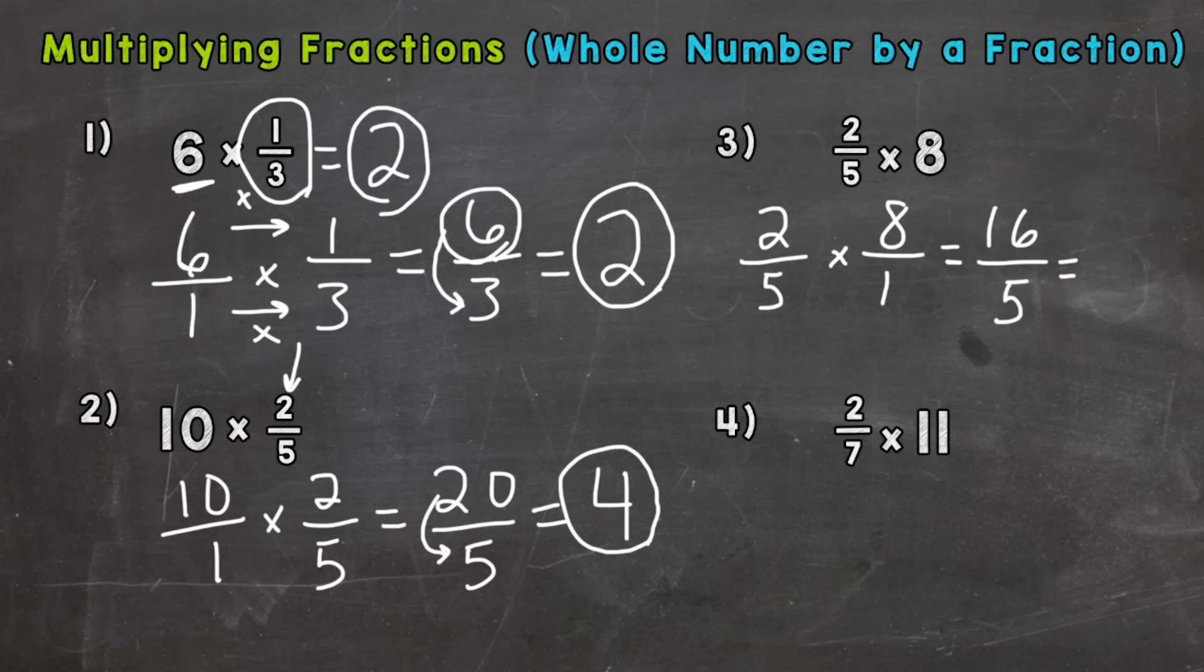Again we have an improper fraction so we need to do 16 divided by 5. How many whole groups of five can we pull out of 16? And the answer to that is three. But we have one left over, right? 16 divided by 5, we get three with a remainder one. So that remainder is a numerator here and then we keep the denominator the same. So three and one-fifth.